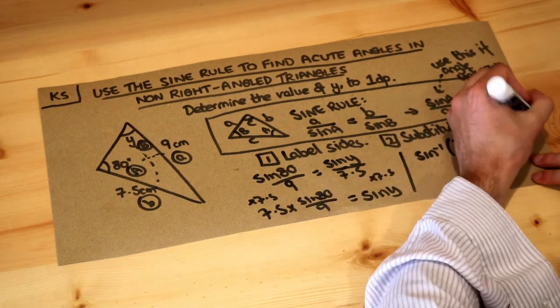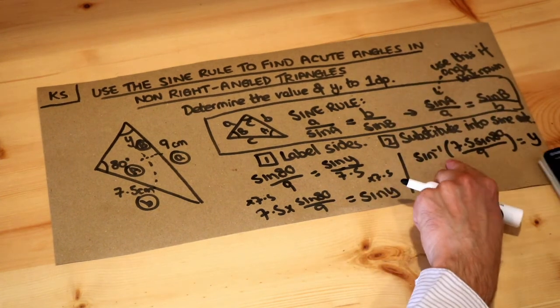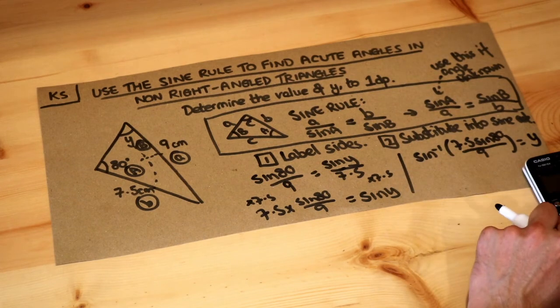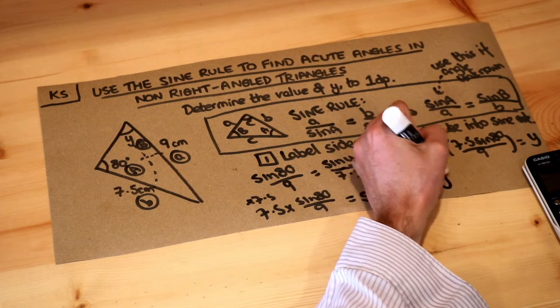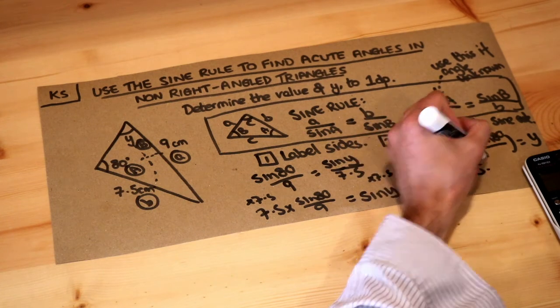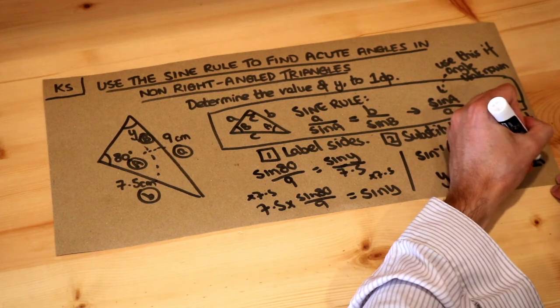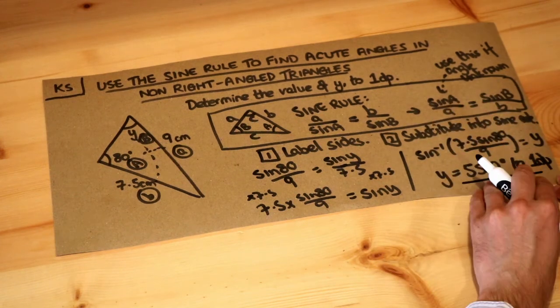So I just need to put this in my calculator now, making sure you close any brackets, so shift sine to get inverse sine, and that gives me an angle of 55.2 degrees to one decimal place, and that is the final answer.